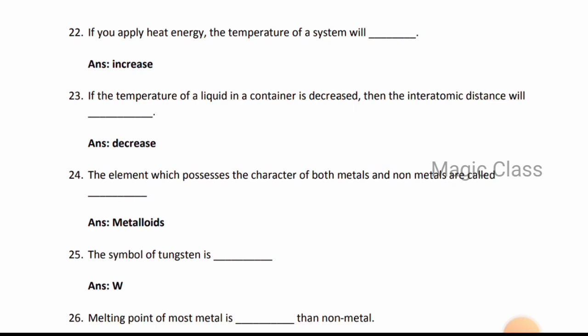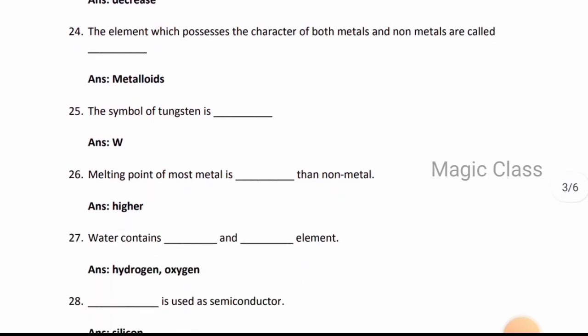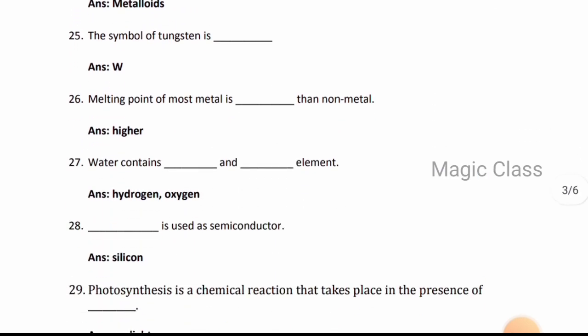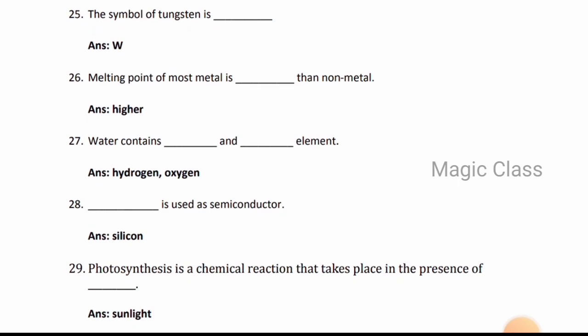Question 26: Melting point of most metals is higher than non-metals. Question 27: Water contains hydrogen and oxygen elements. Question 28: Silicon is used as semiconductor.